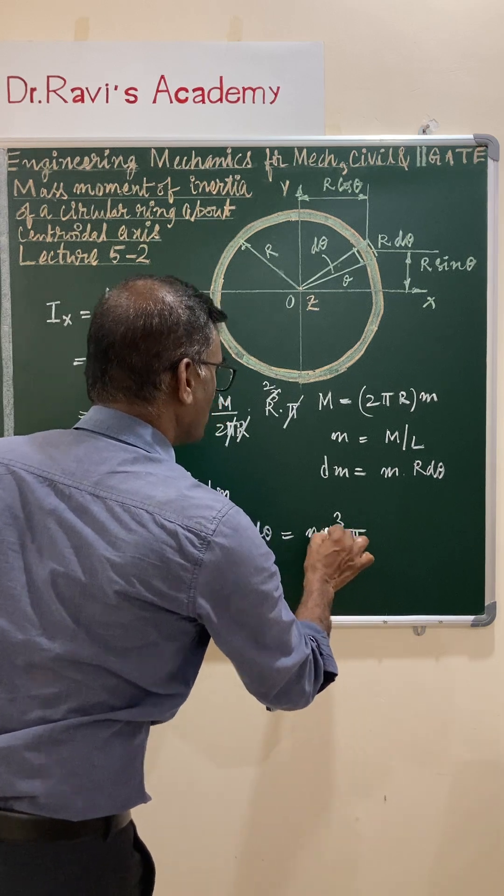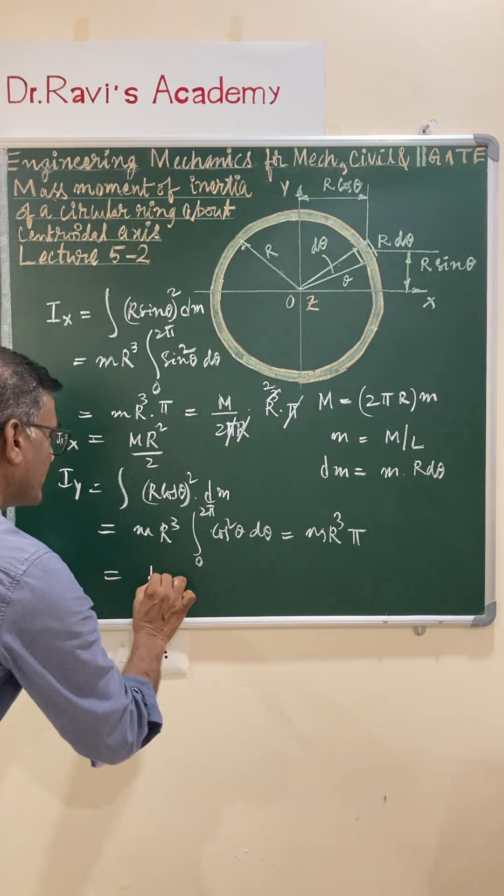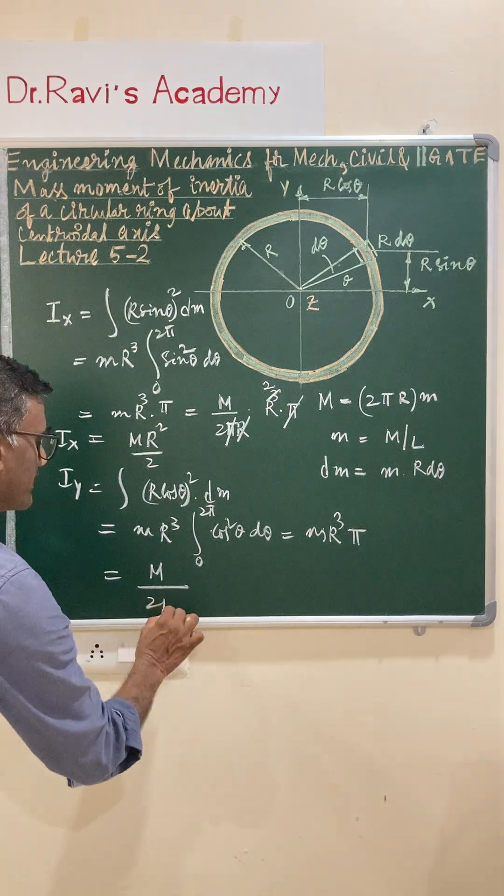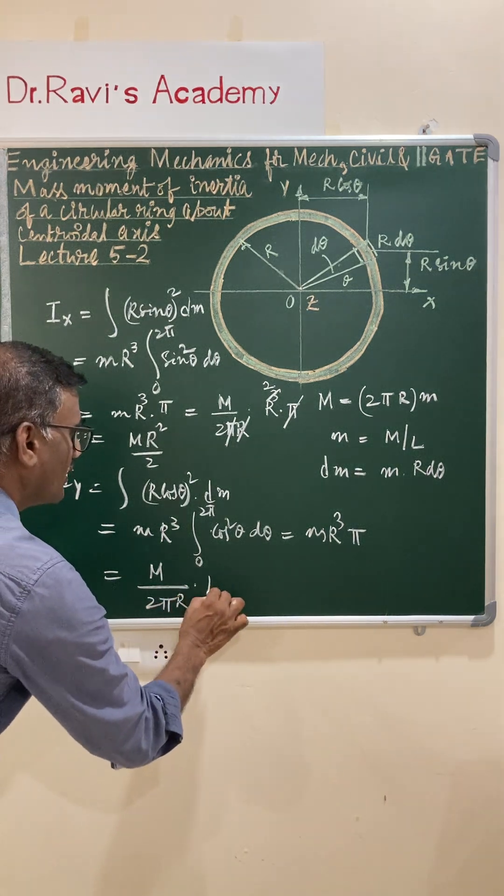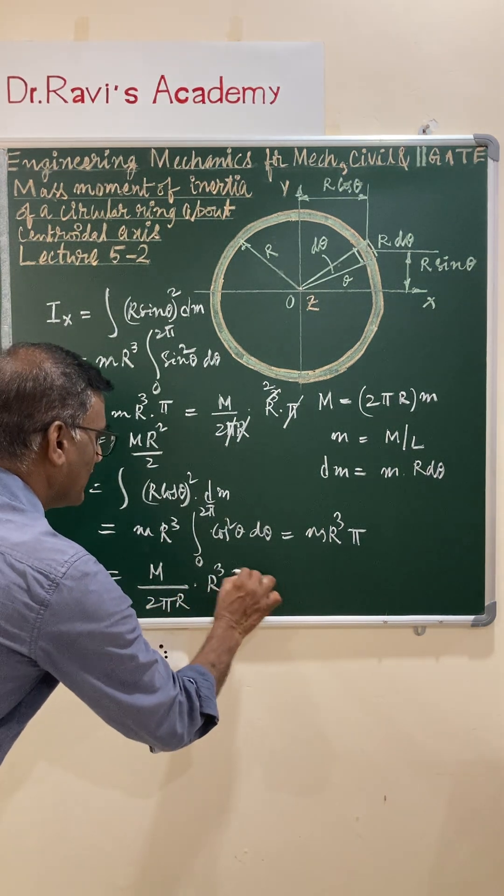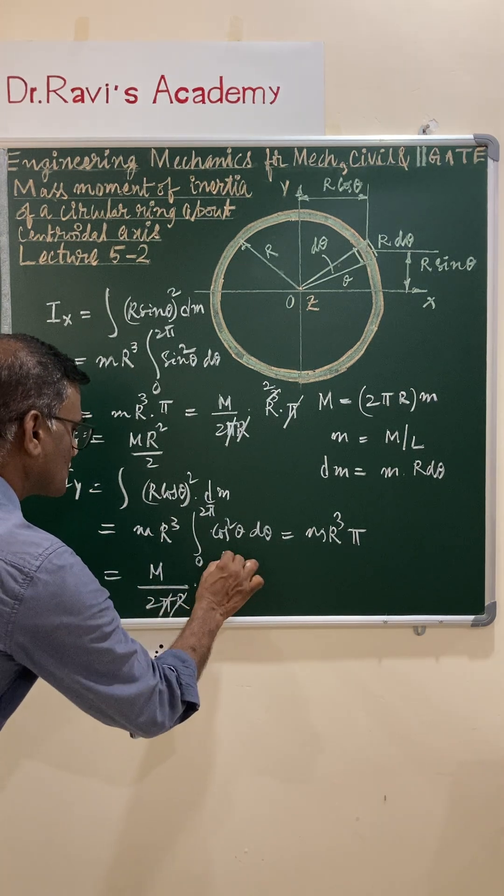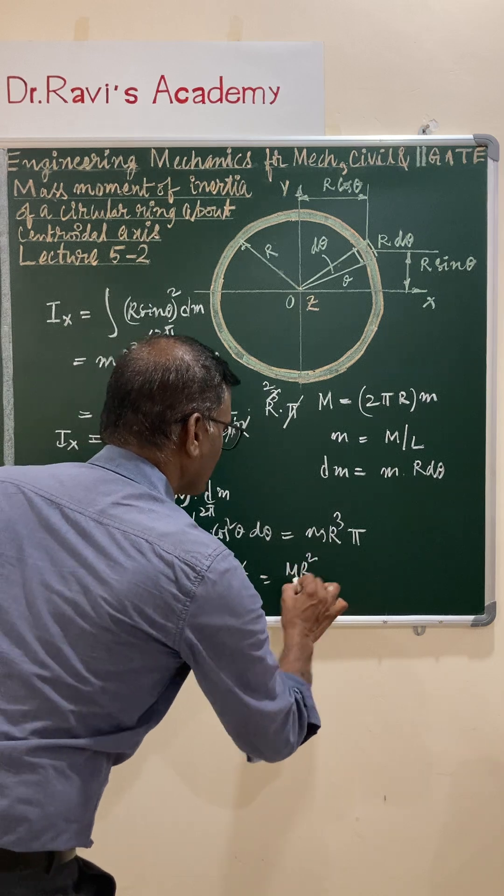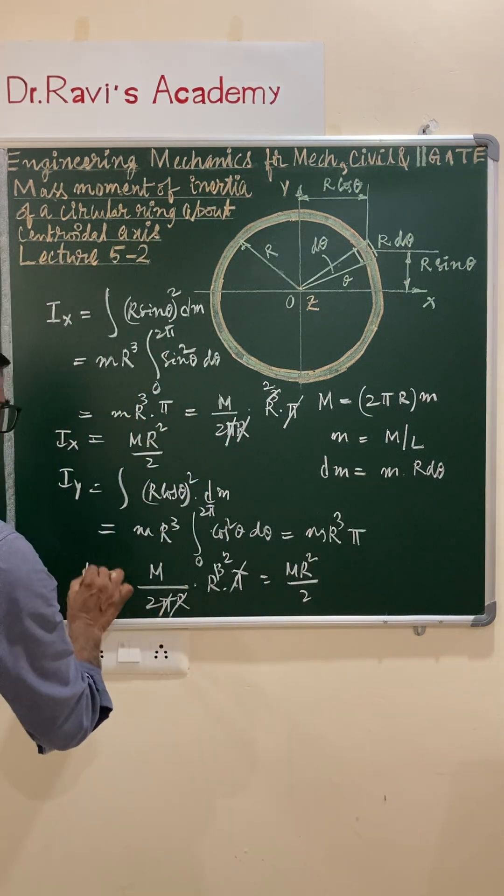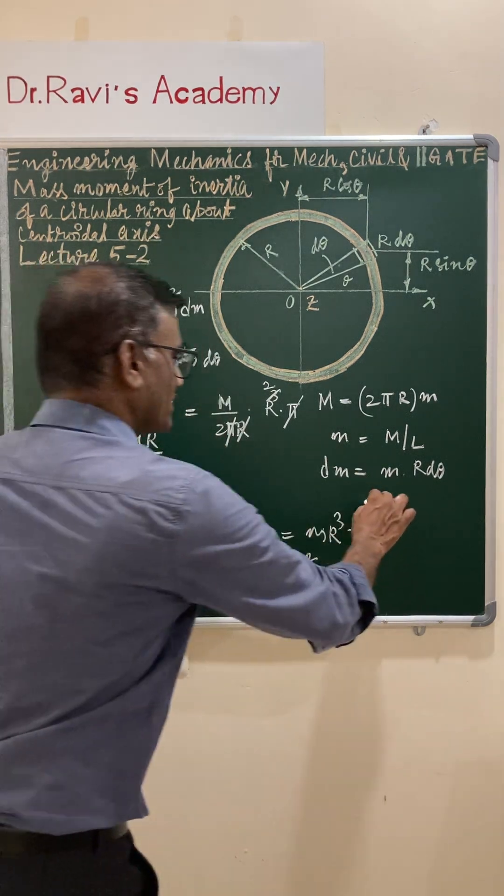So replace the small m and you have capital M divided by 2πr into r³ into π, and you have r². It is again Mr²/2. So your Iy is also Mr²/2.